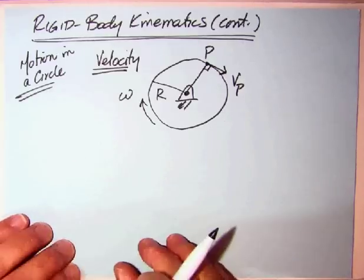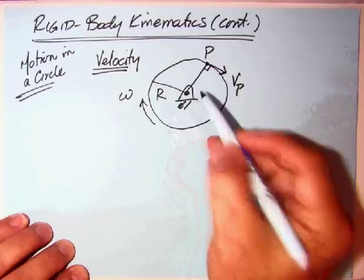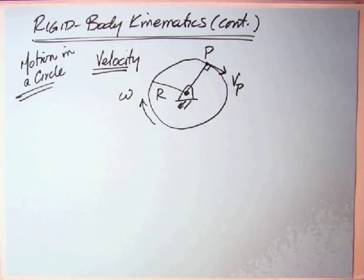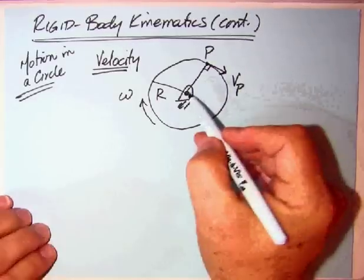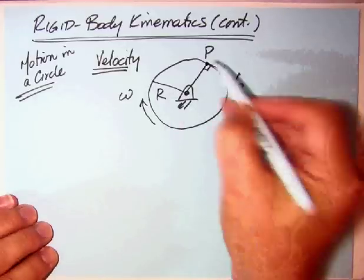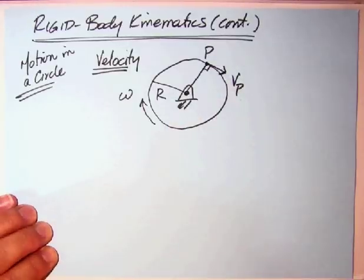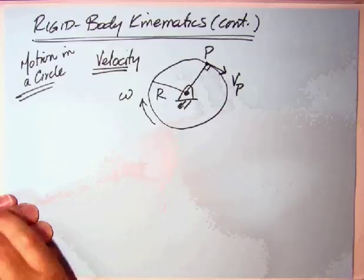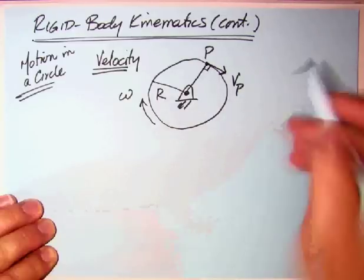Again, to save YouTube time, I've gone and drawn a disc, a wheel that's rotating about its center axis. It's got a radius of R, some point P on the rim. Well, the velocity of P is perpendicular to a line connecting the center to the outside.